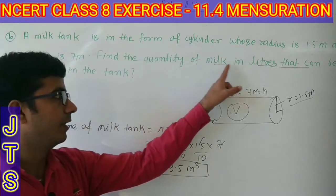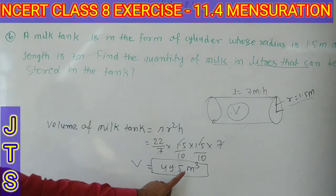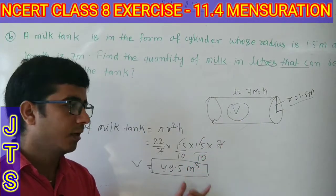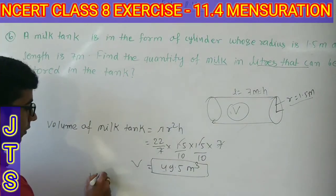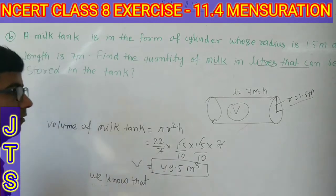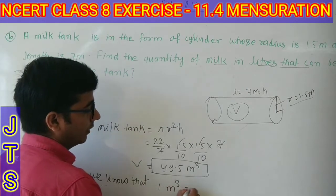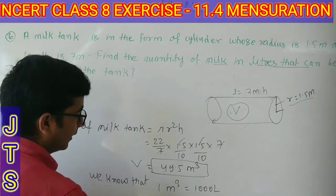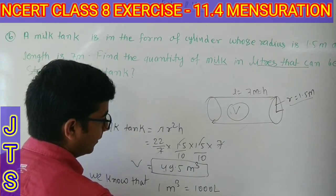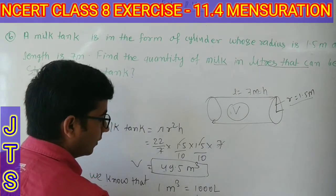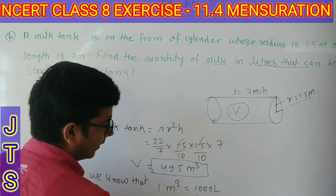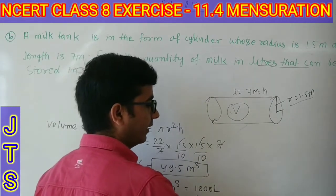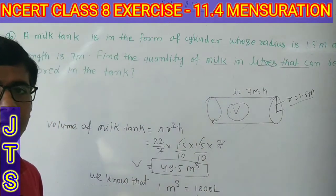Find the quantity of milk in liters that can be stored in the tank. Volume 49.5 meter cube में आया है, इसको liter में change करेंगे। हम जानते हैं 1 meter cube = 1000 liter। तो 49.5 meter cube = 49.5 × 1000 = 49,500 liter। यह आपका answer हो गया।